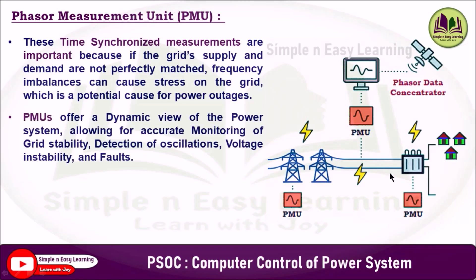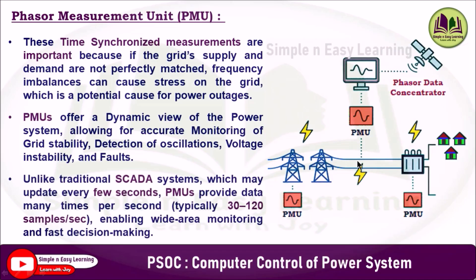Phasor measurement units offer a dynamic view of the power system, allowing for accurate monitoring of grid stability, detection of oscillations, voltage instability, and faults. Unlike traditional SCADA systems which may update every few seconds, phasor measurement units provide data many times per second — typically 30 to 120 samples per second — enabling wide-area monitoring and fast decision making.